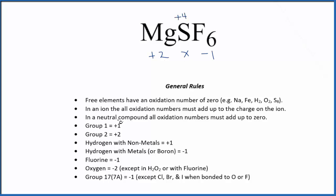And that's because when we have a neutral compound, MgSF6 is a neutral compound, it's not an ion. With a neutral compound, all the oxidation numbers have to add up to 0.